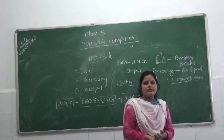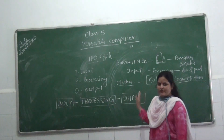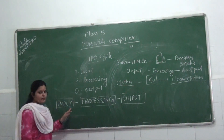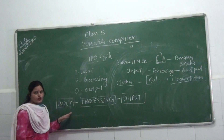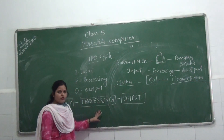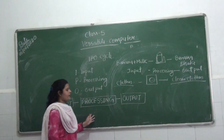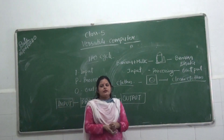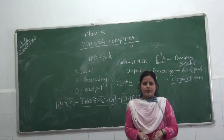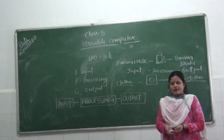I hope you understood the process of input, processing, and output. The input devices are: keyboard, mouse, scanner, and joystick. The processing unit is the CPU, which is the brain of the computer. The output devices are: monitor, printer, and speaker. Thank you.